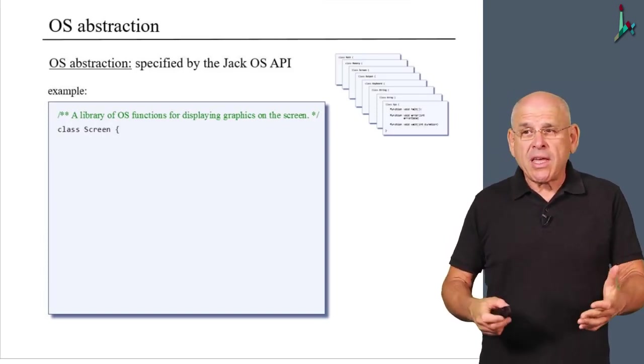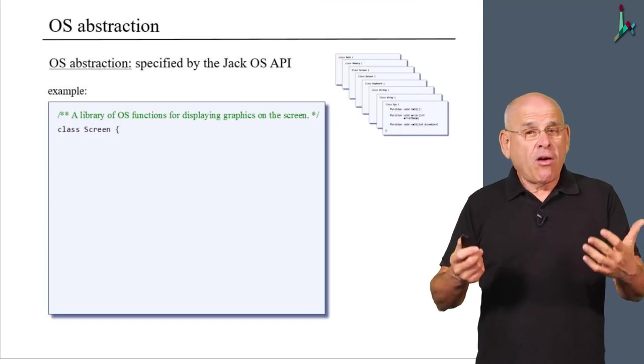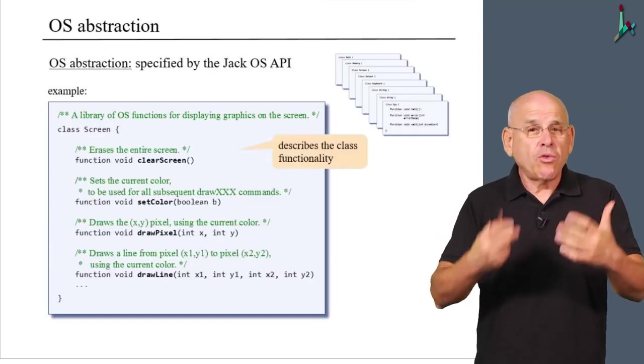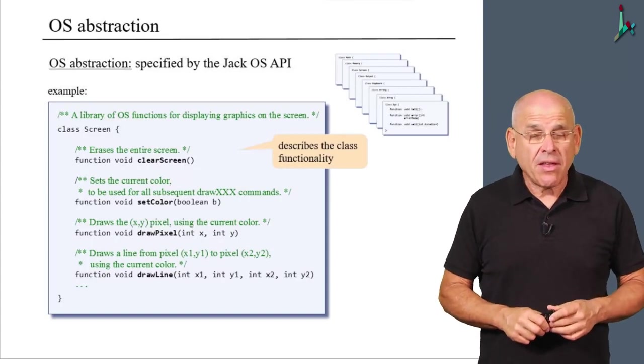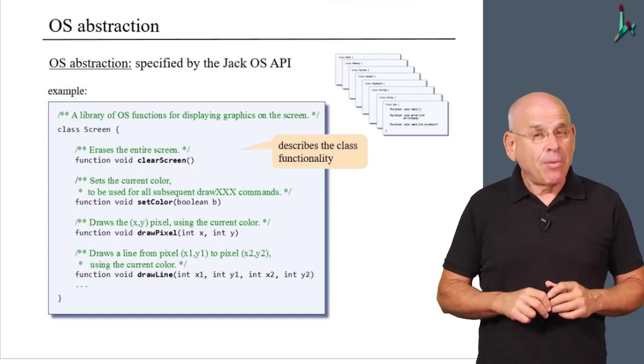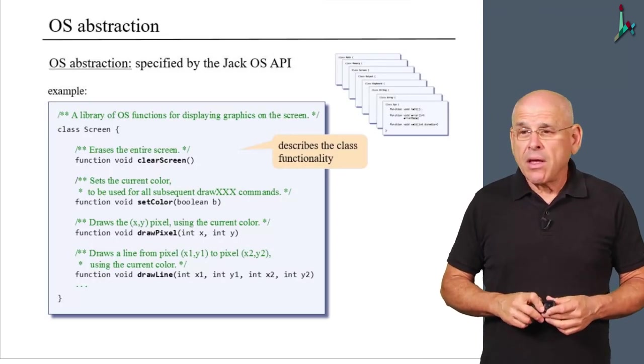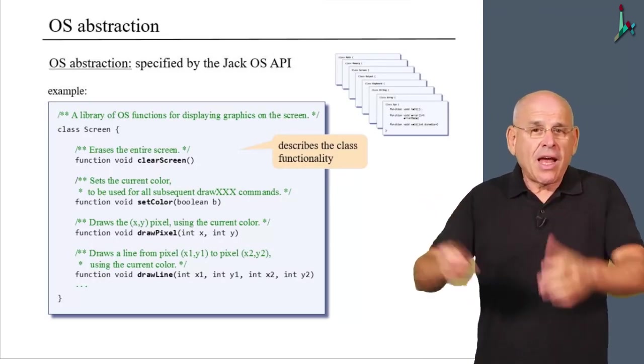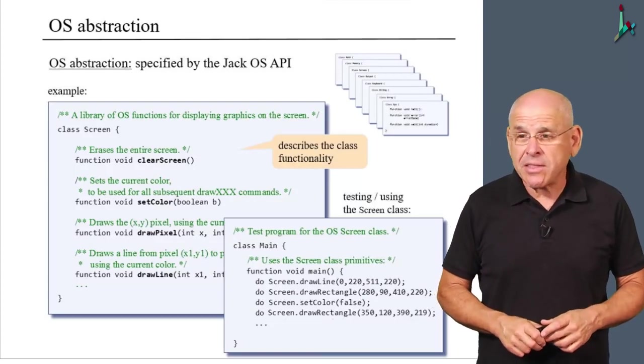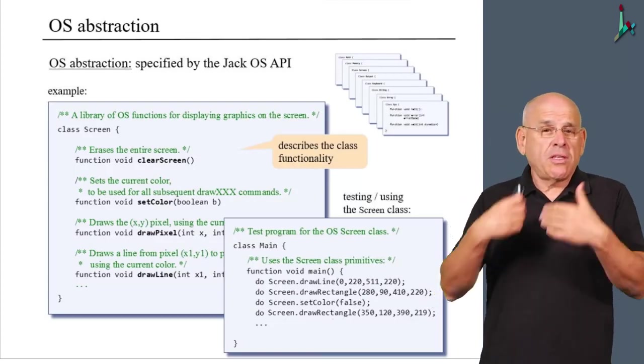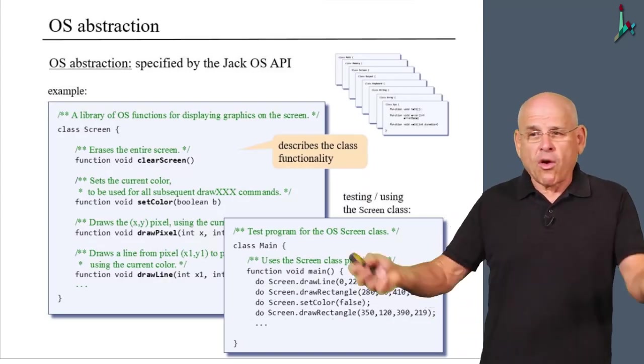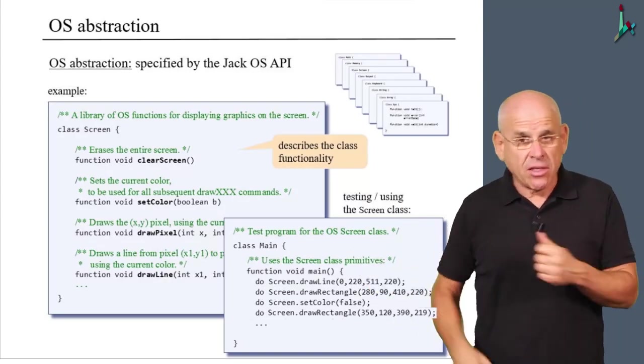Basically, what we'll see is a set of subroutine signatures, each describing how to use it for its effect. And this documentation is aimed at application developers. So an application developer can write some code in any class that he or she desires, and this code can use the services of the screen OS class. It can draw lines and rectangles and circles and what not.